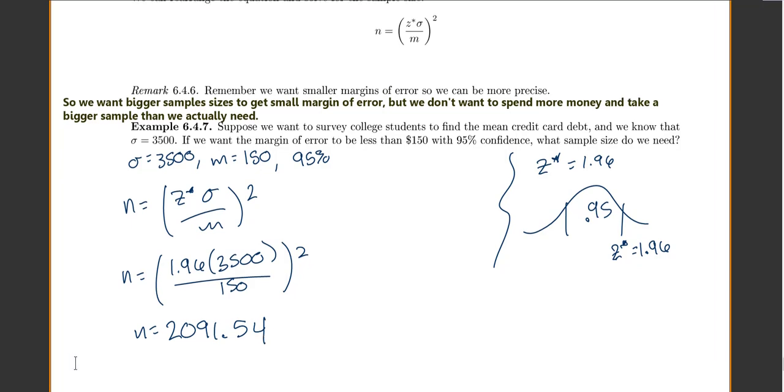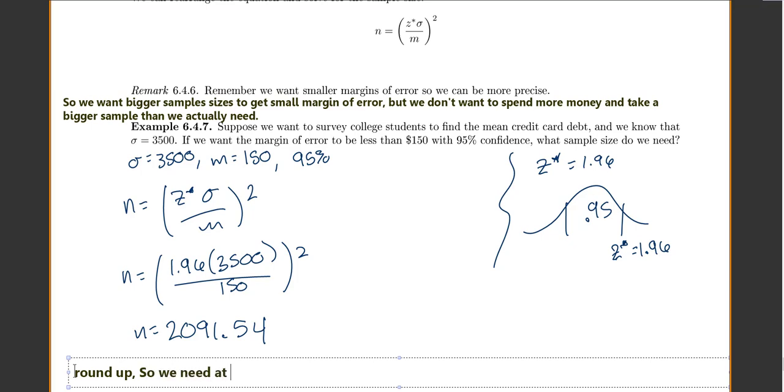You can't sample part of a person, so we will always round up because bigger sample sizes are better. So we need at least 2,092 students to get a margin of error of 150. If we sample more than that, our margin of error will just get smaller and smaller, which is good, but we do know that if we want this margin of error, we need at least 2,092 students. We probably don't want to go much more than that because then we'll just be wasting time and money.